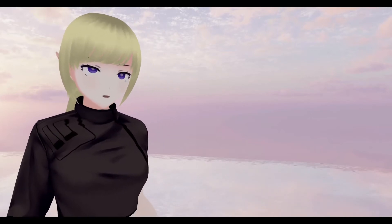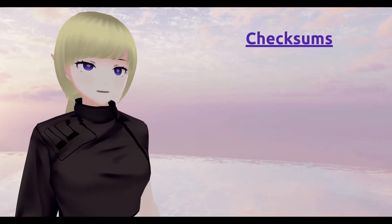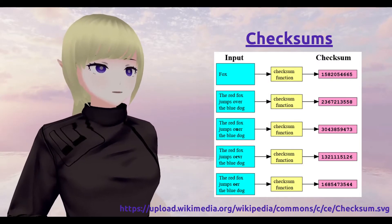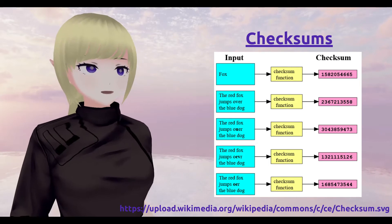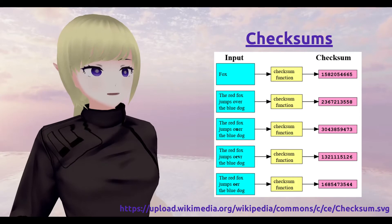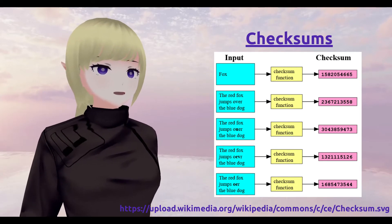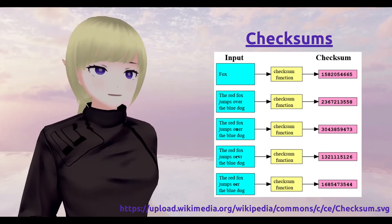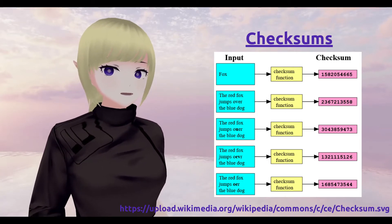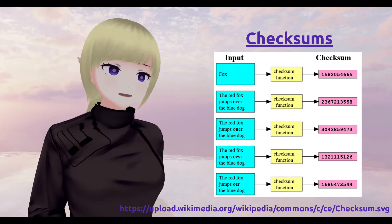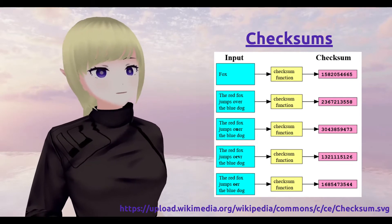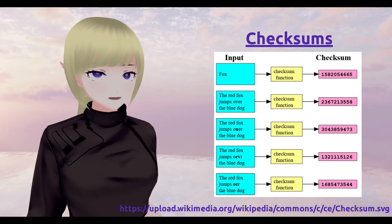One last vocab word before I bore you to death. Let's discuss what a checksum value is. When you record a piece of data, you can run it through a mathematical formula that we call a checksum algorithm. The way that a checksum algorithm works is that for any given input, the algorithm will always return the same output. The use here is that after you run your data through a checksum algorithm, you can then record that output alongside your data. That way, when someone reads the data back, they can then put that data through the same checksum algorithm that you used when you wrote the data and compare the result to the checksum value that was stored alongside the data.